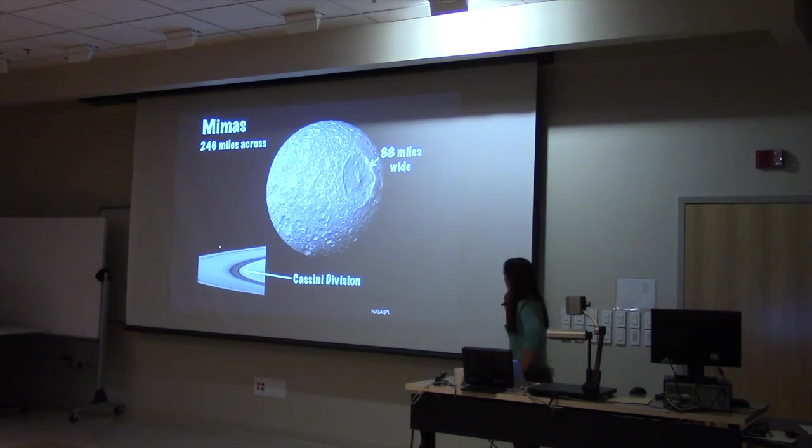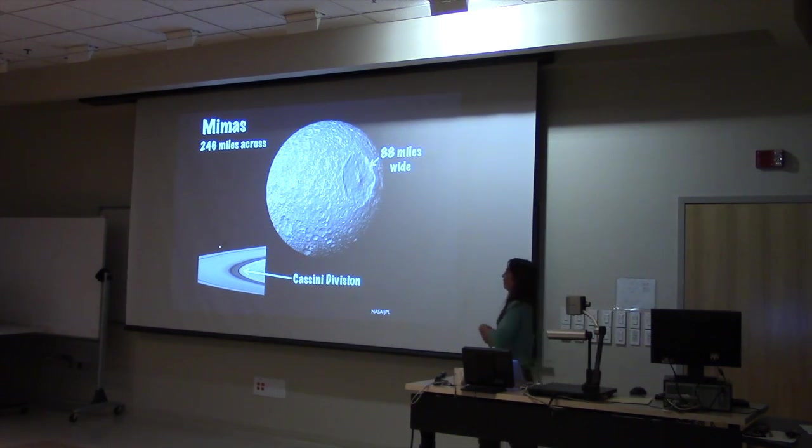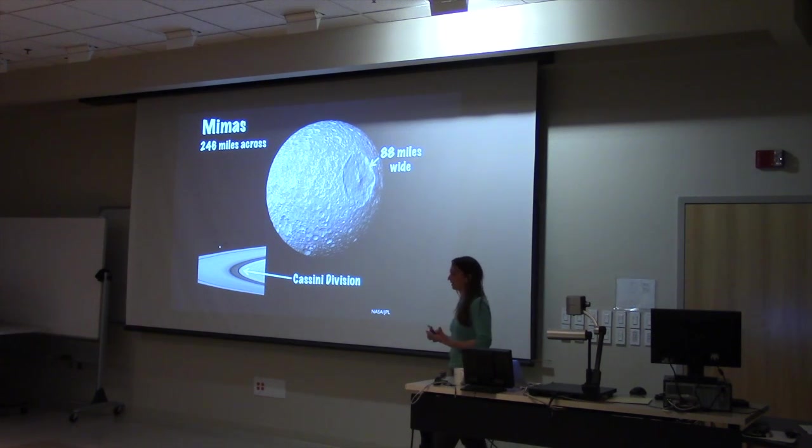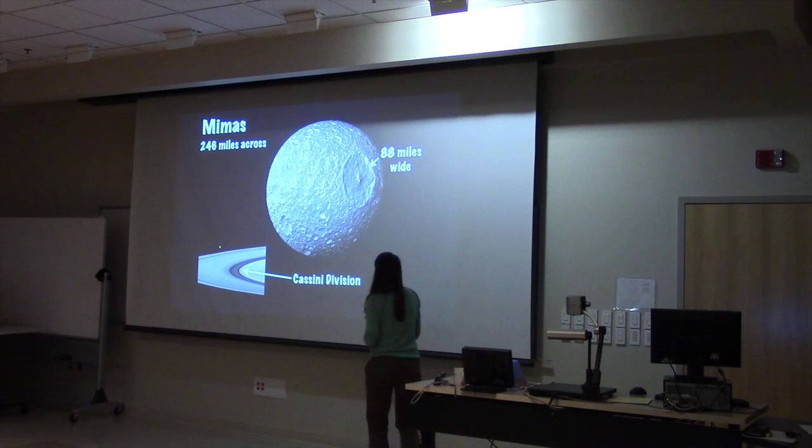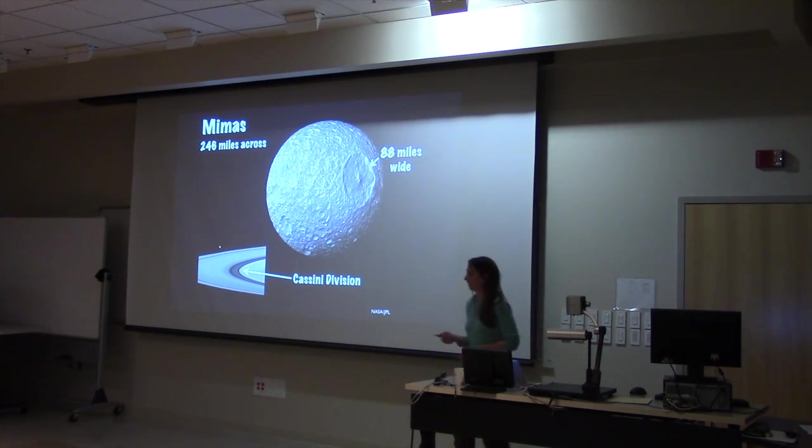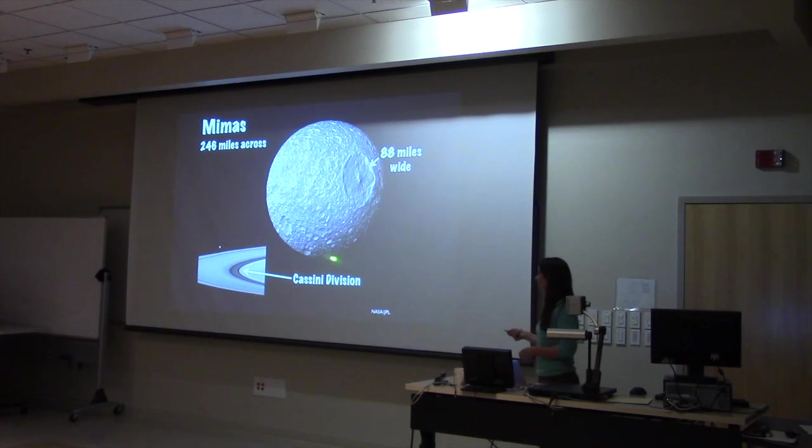Here is that big impact crater. It's called the Herschel Crater. It's 88 miles wide, so it's pretty much a third of the diameter of Mimas. Mimas is interesting because it's one of the most heavily cratered objects in the solar system. You can see it's about as cratered as an object can be. It's got craters on craters on craters.